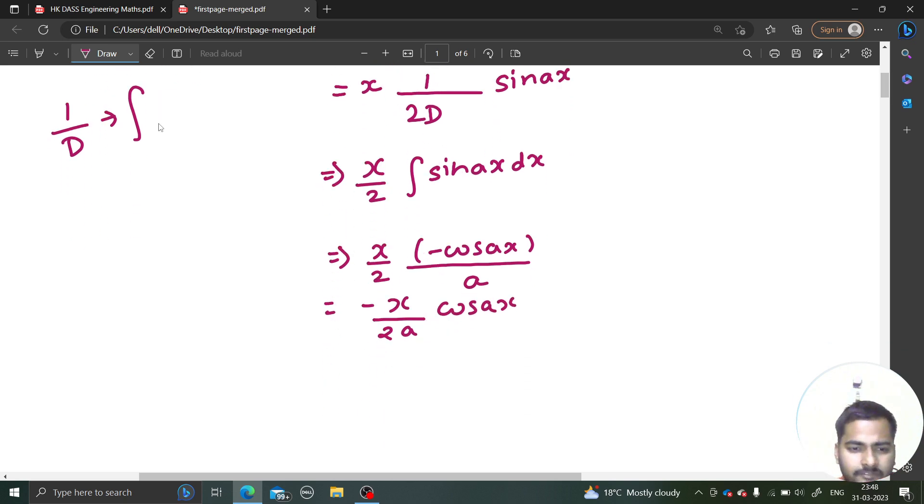Finally, your y will be CF plus PI. So y will be CF plus PI. That means, what was your CF? It was c1 cos ax plus c2 sin ax.